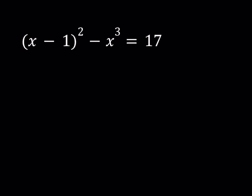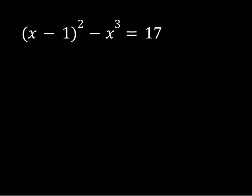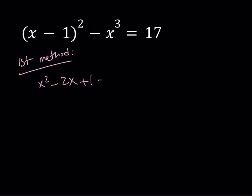We'll see in a little bit but first I want to show you the first method. I'm not going to completely work it out but I just want to talk about it briefly. Now if I expand everything I get x squared minus 2x plus 1 minus x cubed is equal to 17. If I put everything on the same side I get x cubed minus x squared plus 2x plus 16 is equal to 0.